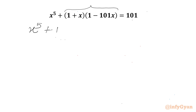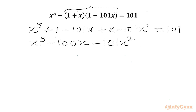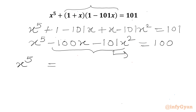I will write 1 minus 101x plus x minus 101x square equal to 101. Or I can write x power 5 minus 101 plus 1, so I can write minus 100x, then minus 101x square. And if I take 1 to the RHS I will write here 100 only. Now I can take these two terms to the RHS, so we will get x power 5 equal to 101x square plus 100x plus 100.